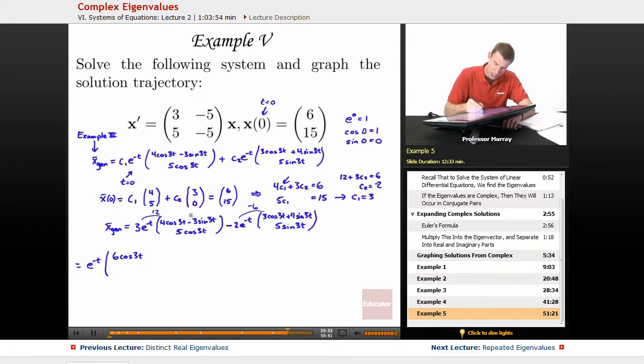Now minus 9 sine and minus 8 sine over here because of the minus 2 outside, so minus 9 minus 8 is minus 17 sine of 3t.